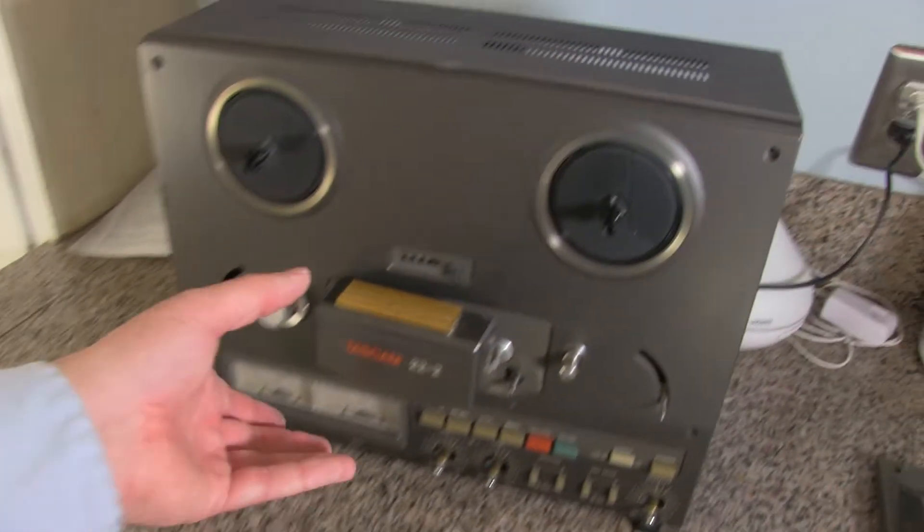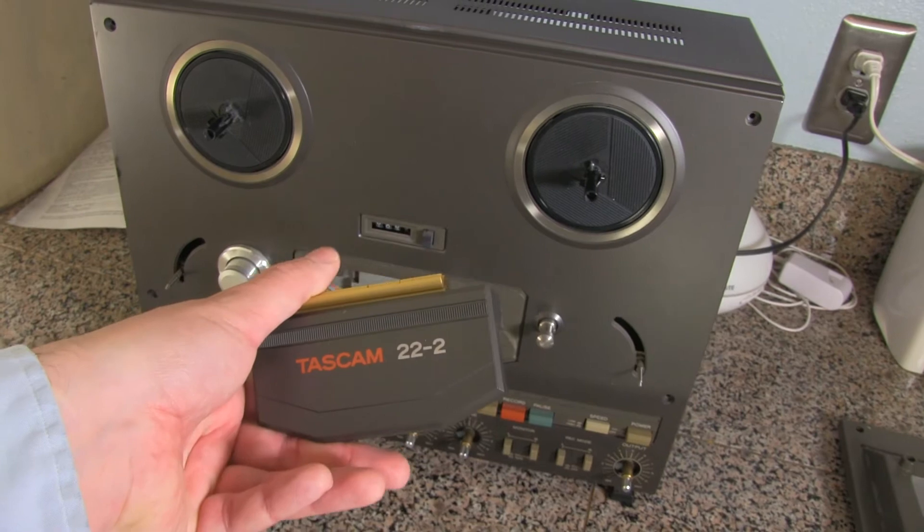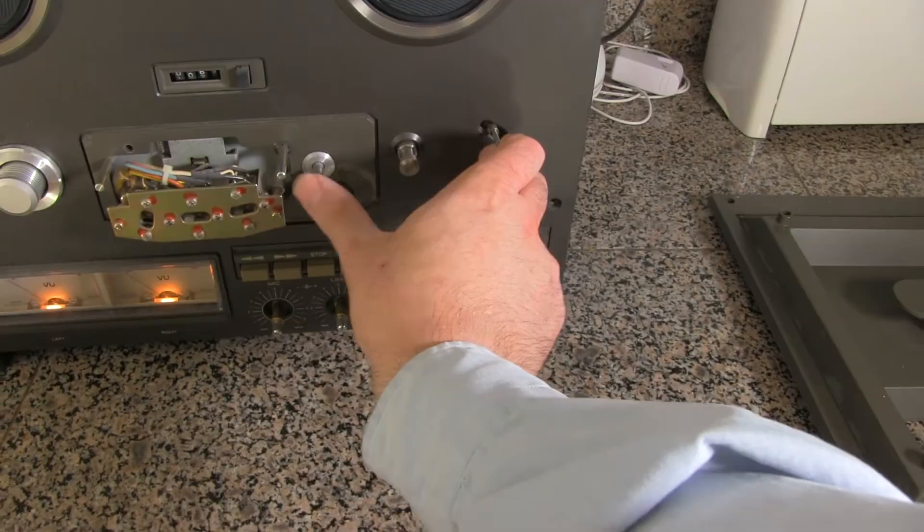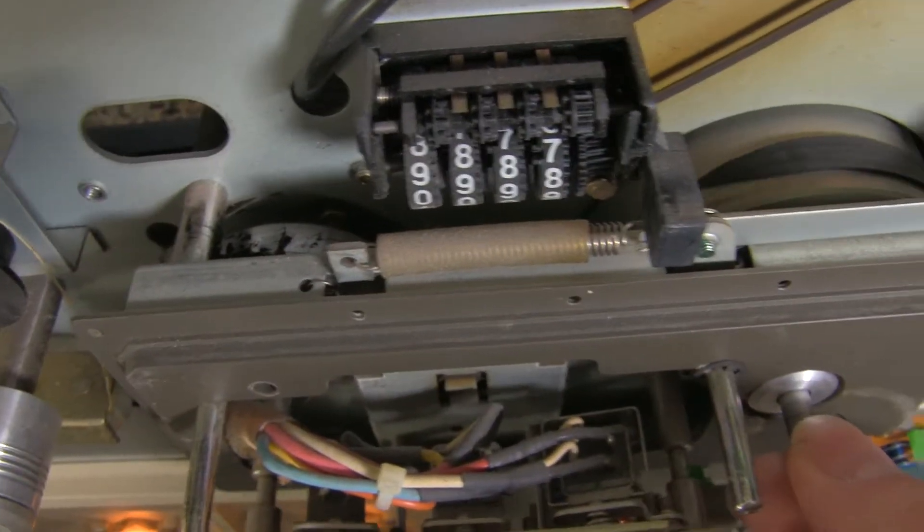I have an interesting little project that just arrived in the mail - a Tascam 22-2. The capstan is not turning because the drive belt has turned to goo.